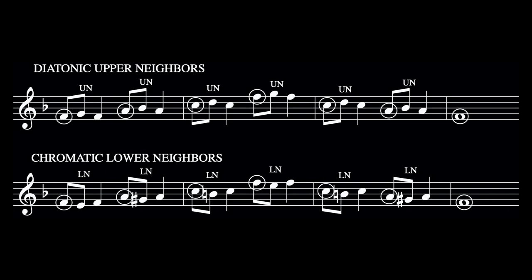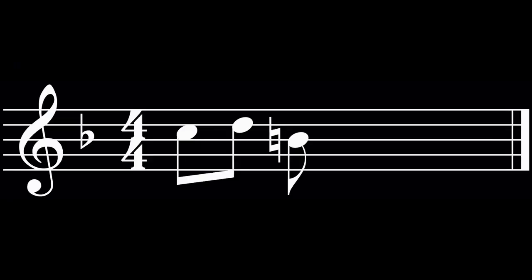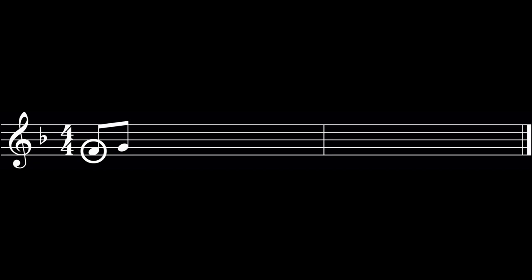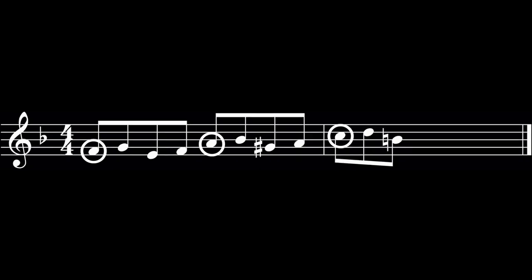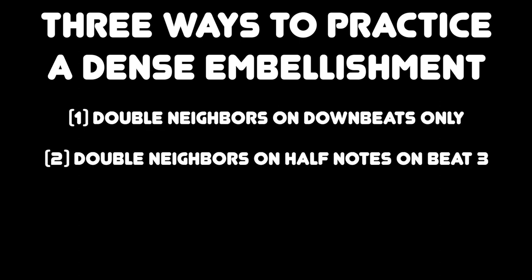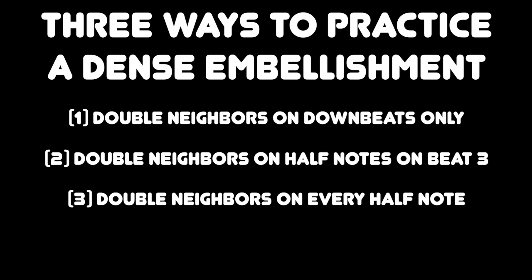Let's test that theory by adding double neighbors to the little major triad melody, including both upper and lower neighbors before returning to each melody note. Start with the melody note, upper diatonic neighbor, lower chromatic neighbor, melody note. Then right on to the next melody note: upper neighbor, lower neighbor, melody note. Then right on to the next: upper, lower, melody note. Because this embellishment pattern is so tightly packed, we'll practice it in three ways: first, where we only add double neighbors to notes on the downbeat of each measure; second, where we only add them to the notes on beat three of each measure; and lastly, where we add them to every half note, where the resulting exercise will be the most dense.